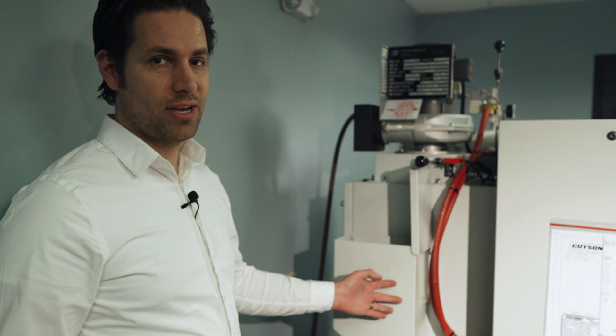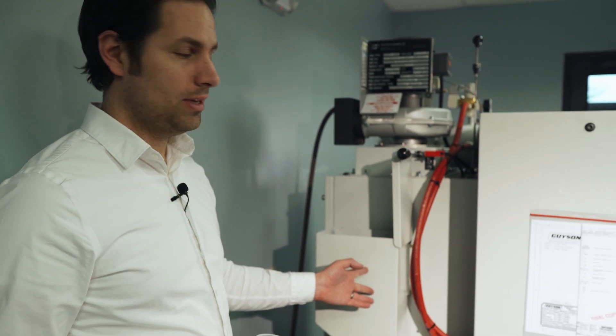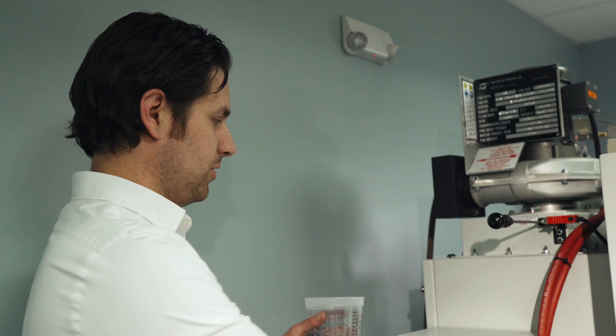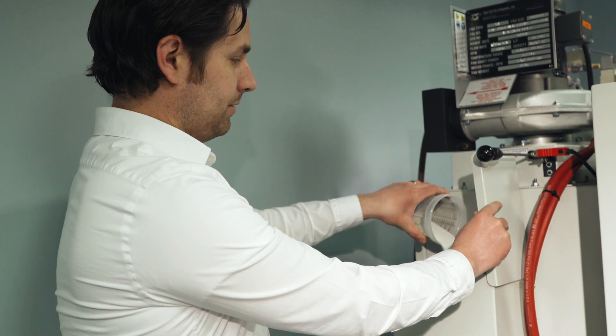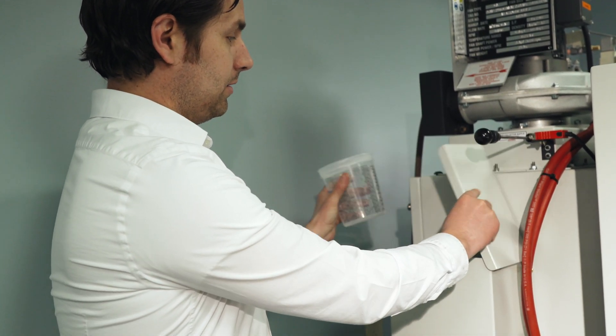This system features a single use media hopper. That's this unit back here. You can add media just by lifting the lid and pouring in right here. This has the benefit of protecting the color clarity on your 3D printed parts.